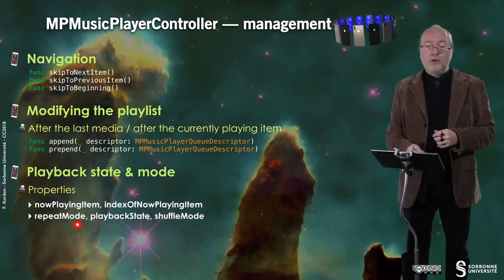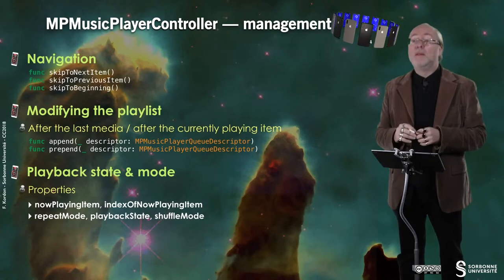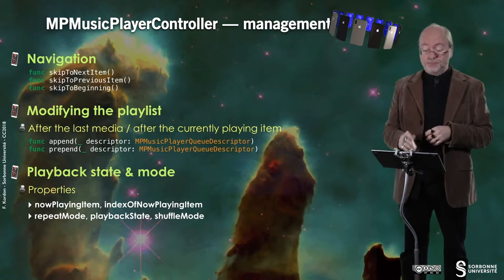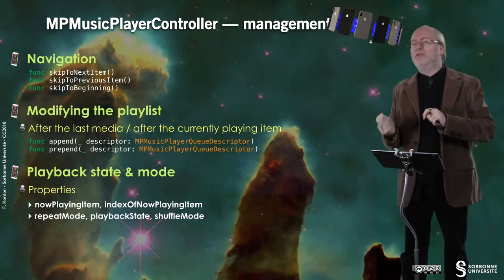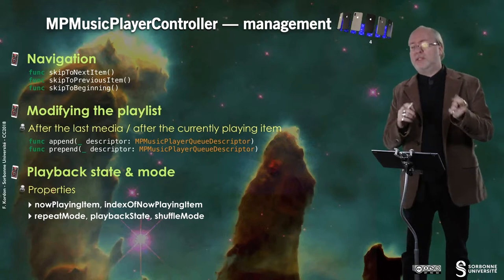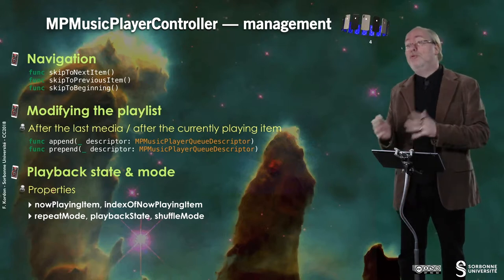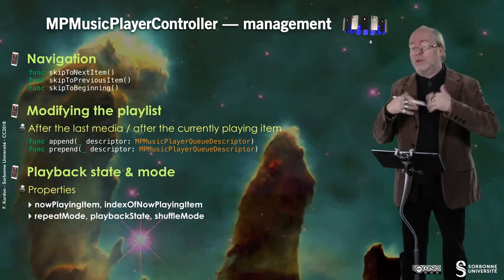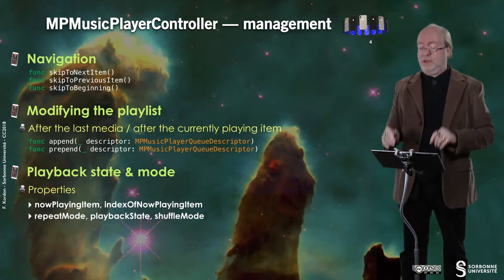Repeat mode has several values: you can repeat a track or repeat the full playlist. Playback state tells you if you are currently stopped, paused, etc. Shuffle mode, true or false, determines whether you go randomly or track by track.